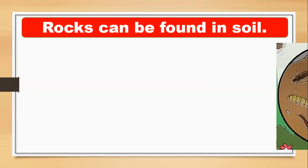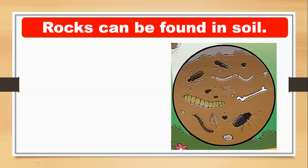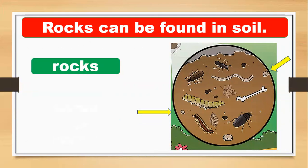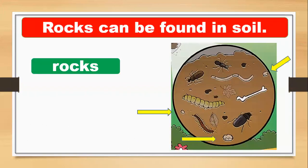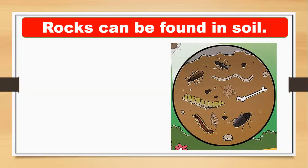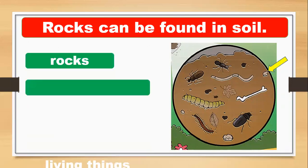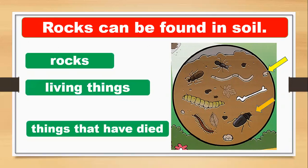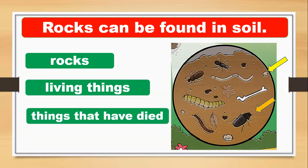Rocks can be found in soil, as we learned in the previous lesson. Rocks are natural materials. Also, living things are natural, and dead flower leaves are also natural. So rock can be found in soil, and living things are also natural materials — you will call them natural.